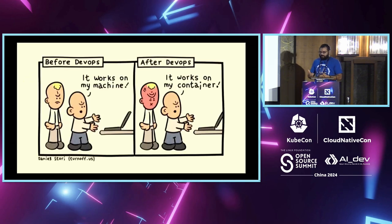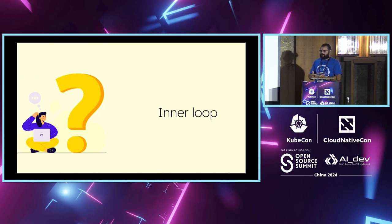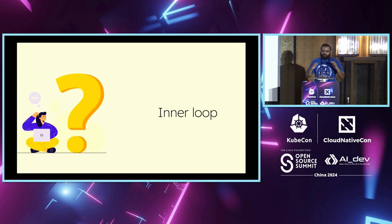There used to be a problem of 'it works on my machine.' That sort of went away, but now it's manifested in the form of 'it works on my cluster — does it work on yours?' This whole notion of local clusters and smaller clusters that help bridge the gap is available, but it really doesn't cut it. There are a lot of questions about how best to design your local environment and how to do parity with production and things like that.